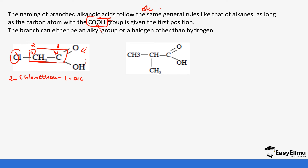The first thing is to identify the parent chain — the one that has the basic unit. We start numbering from this side: one, two, three. When we start numbering from that side, you can see there is a branch of methyl at carbon number two, so we call it 2-methyl. This is propanoic, so it is propane. The OIC is at carbon number one, so: 2-methylpropane-1-oic acid.